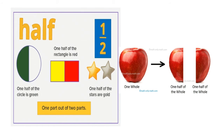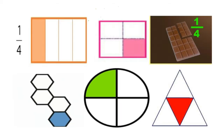One whole is divided into two equal parts is half. One half — one half of the rectangle is red. One half of the circle is green. One half of the stars are gold. One apple is divided into two halves.